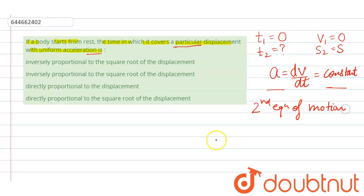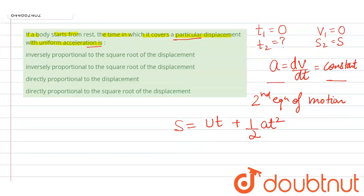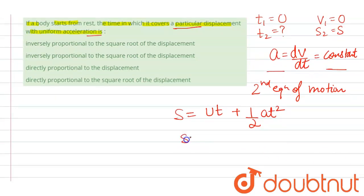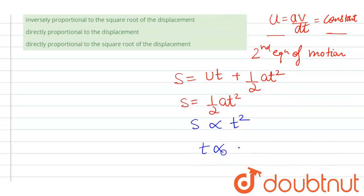And Newton's second equation of motion says that s equals ut plus half at square. Here u is zero so you can say s equals half at square, which means that the displacement is directly proportional to t square, or you can say t is directly proportional to root s.